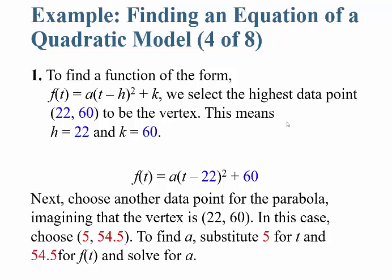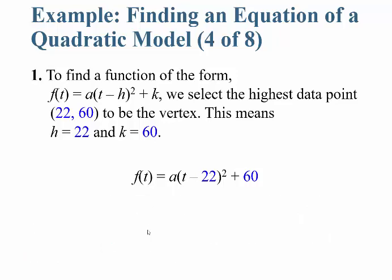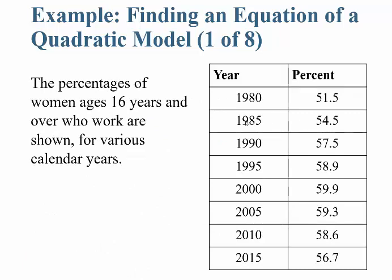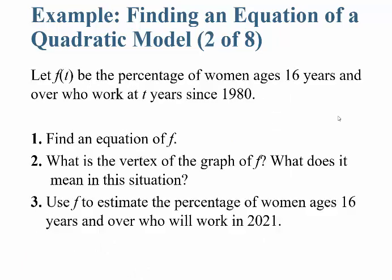Next, choose another data point from the parabola — imagining the vertex is at (22, 60). In this case, let's choose the point (5, 54.5), which is 5 years since 1980 with a value of 54.5.